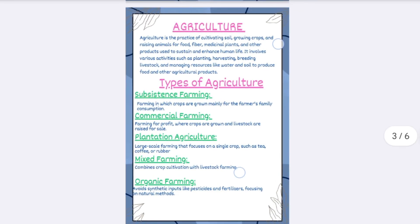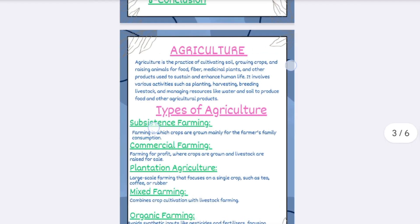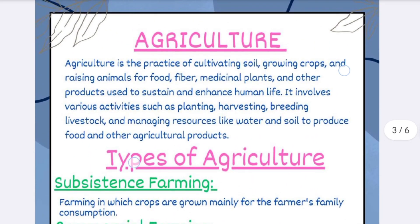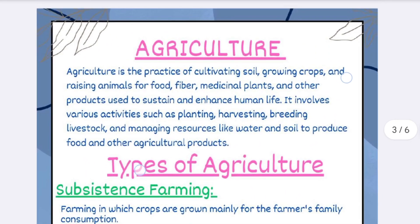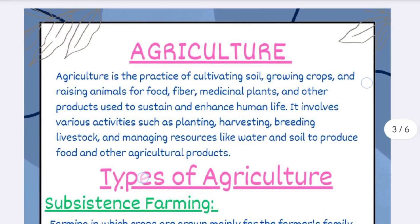The first topic is agriculture — what is agriculture — and then types of agriculture. Let's take a close look at the page. You can write a song about agriculture like this.